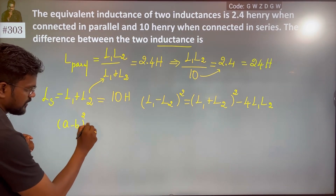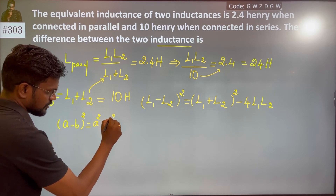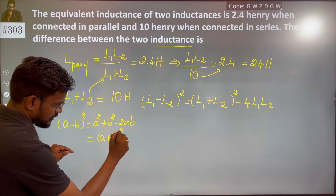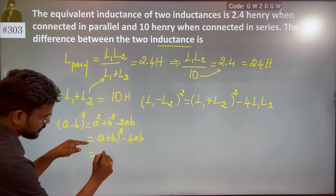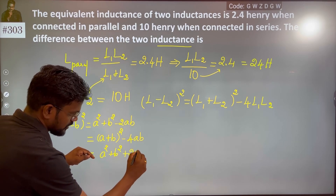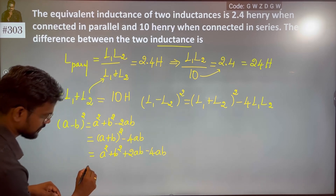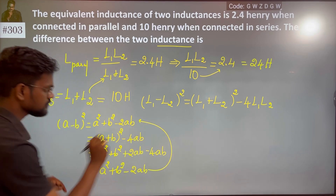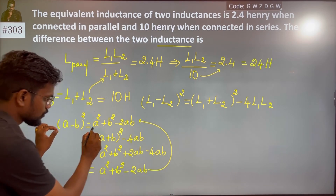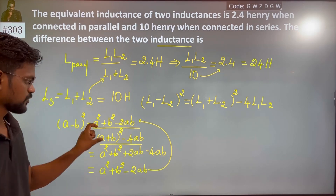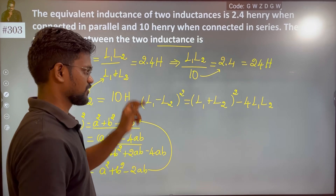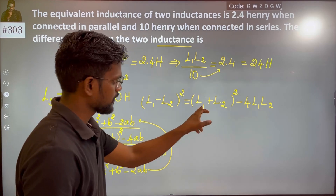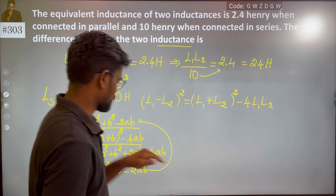Recall that A minus B whole square equals A squared plus B squared minus 2AB, which can be rewritten as A plus B whole square minus 4AB. So L1 minus L2 squared equals L1 plus L2 squared minus 4 times L1 times L2. This formula is direct.